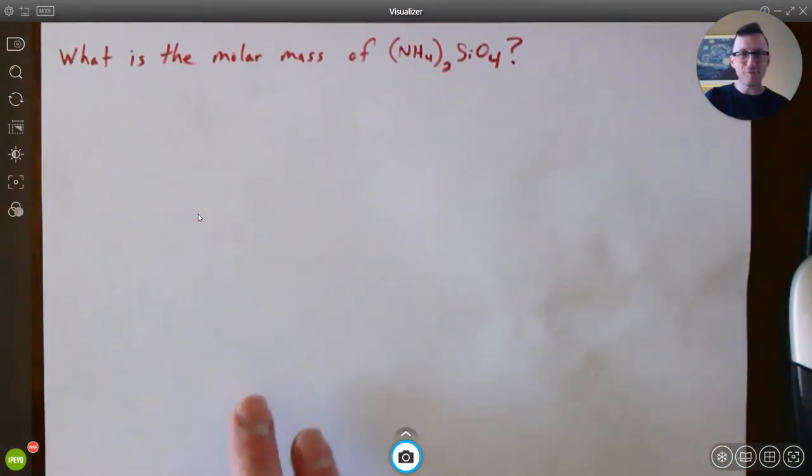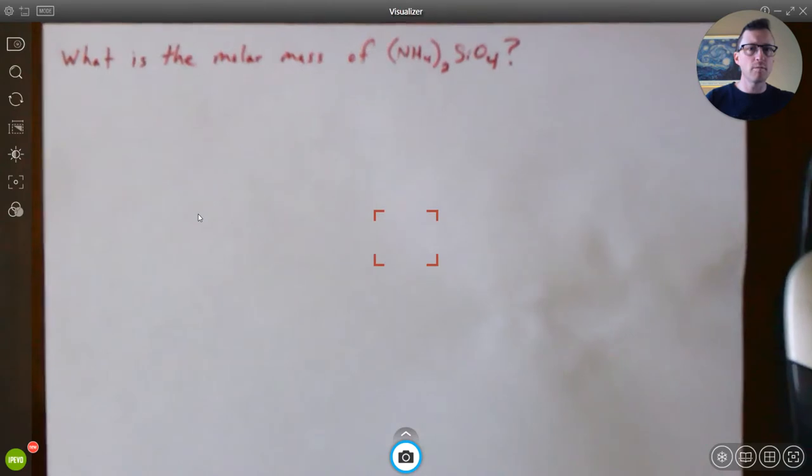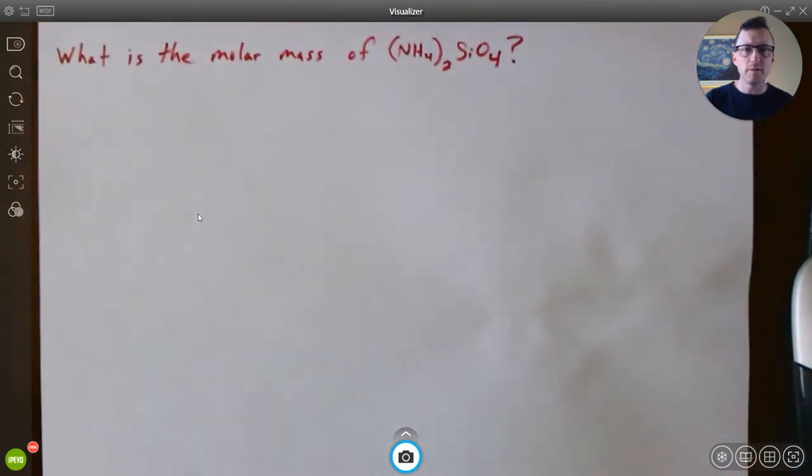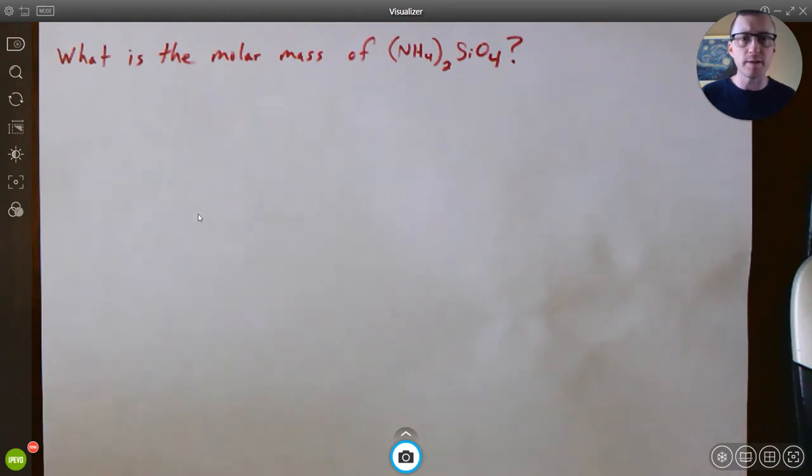Everybody, welcome back. We're going to do a couple quick problems here, first on molar mass and then how to use molar mass to do a gram-to-moles conversion. So first question here is: what is the molar mass of this chemical, (NH4)2SiO4, ammonium silicate? So first off, you're going to need your periodic table.